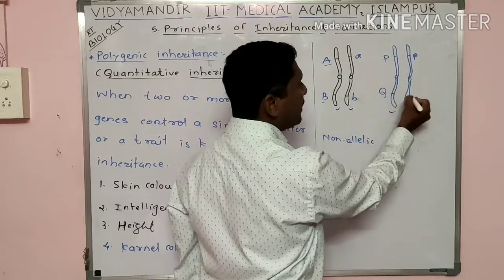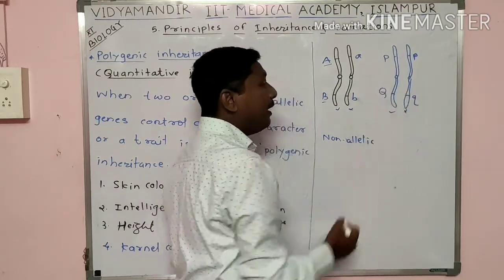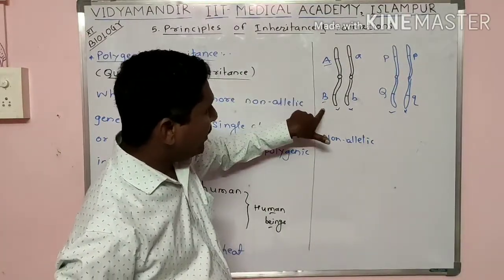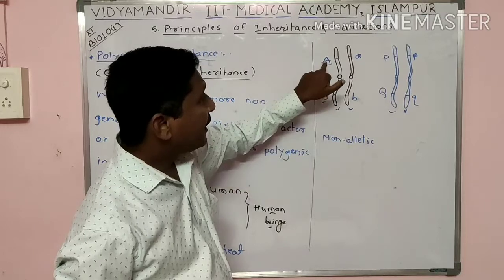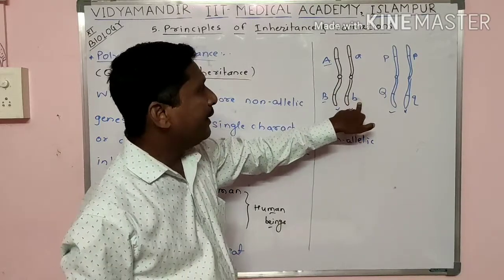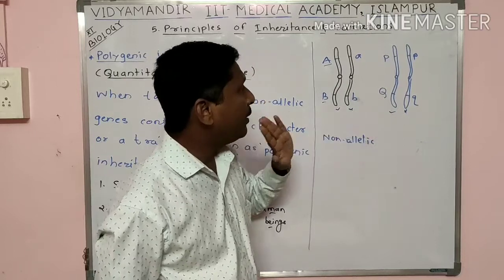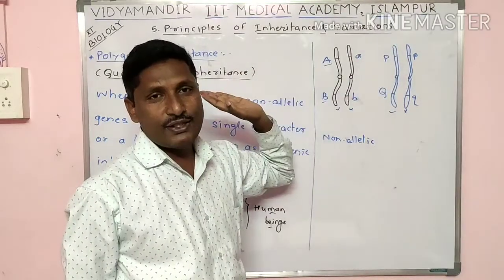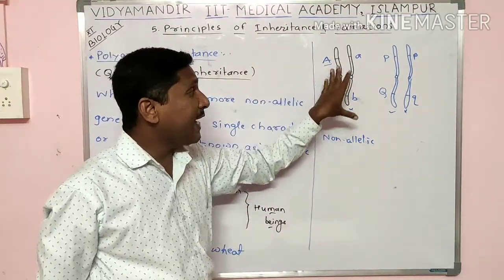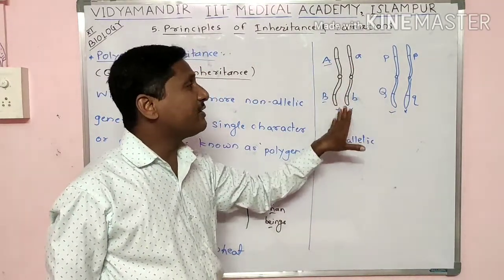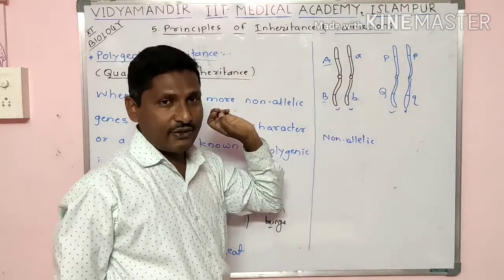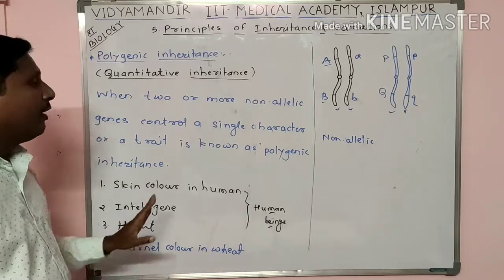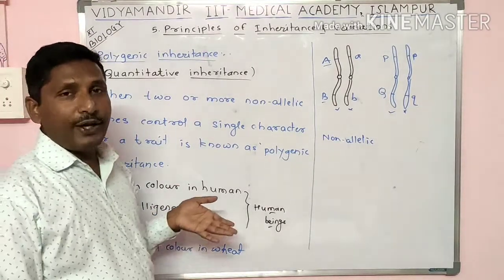Capital Q and small Q are allelic genes. But capital A and capital B, capital A and small b, capital A and capital Q — these are all non-allelic genes, occupying different loci. Non-allelic genes interact to affect the expression of a single character.